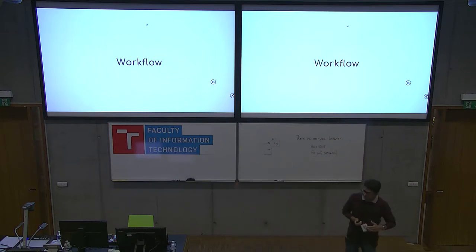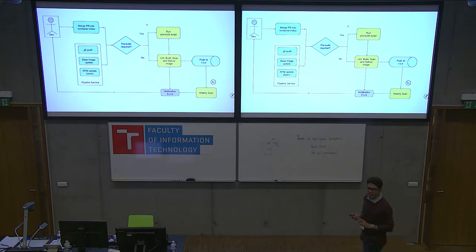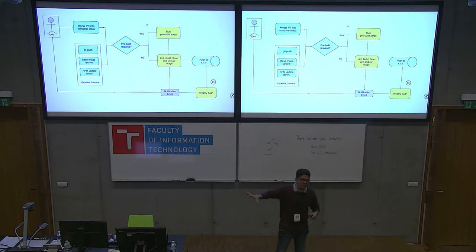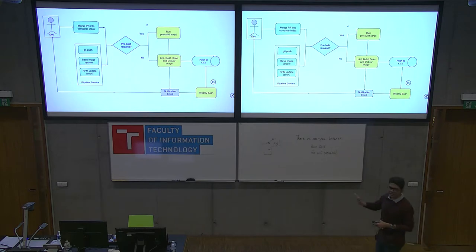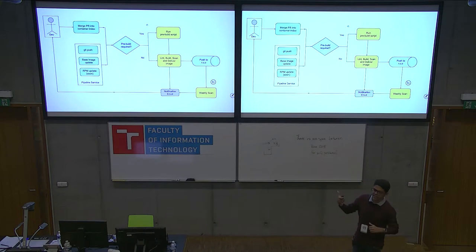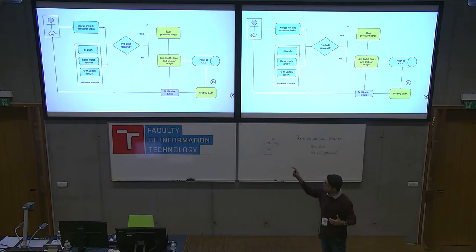Quickly going through the workflow: there's only one time a user has to interact with the service — when you get onboarded with the project. When you say, okay, this is my open source project, we're building container images on top of CentOS and we want to build on your registry, you open a PR on github.com/centos/container-index. That's the only time. We take a look at it, and once we merge it, we first check if a pre-build is required, run the pre-build script, then do the lint, build, scan, deliver, push the image to registry.centos.org, and finally send the email.